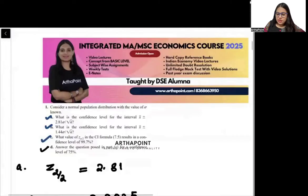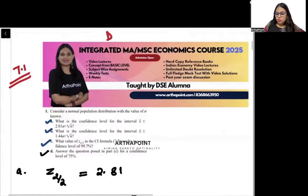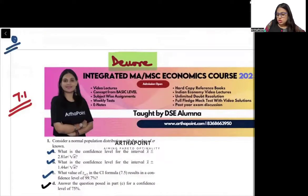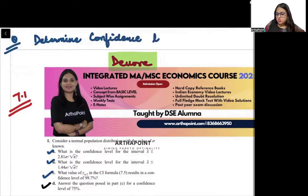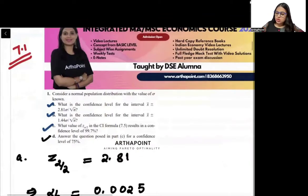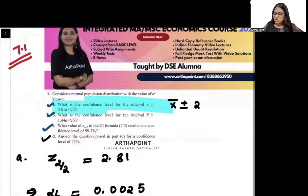This is question number 7.1 of Devore. Let us try to read and do this question. The question is asking us to determine how to find the confidence levels. Using this question, I will also teach you how to read the Z-table. The question says: what is the confidence level for the interval x-bar plus minus 2.81 sigma by root n?